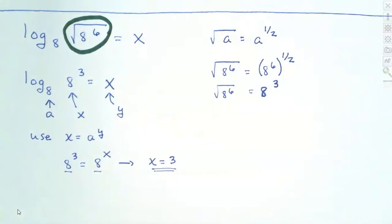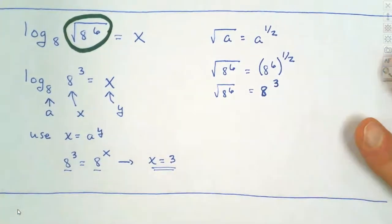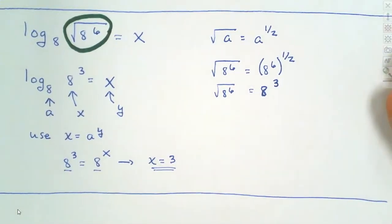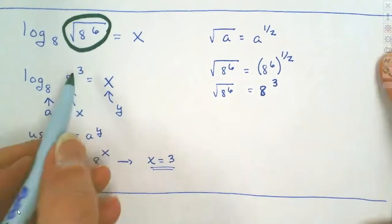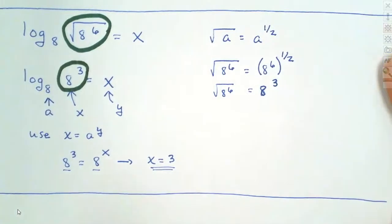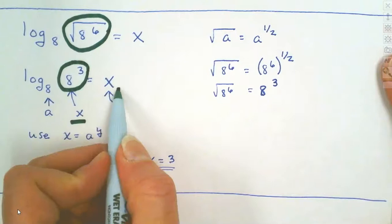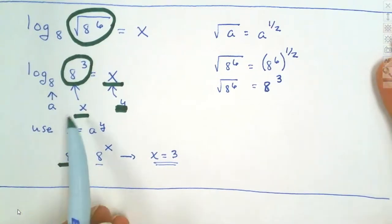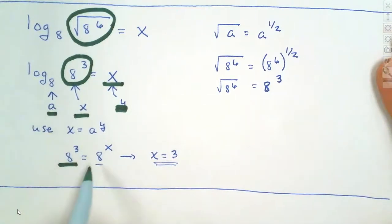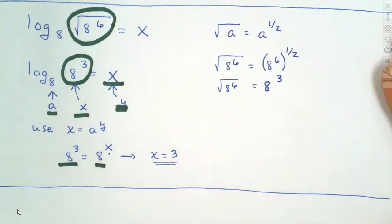All you have to know how to do on these is transform from a logarithm into an exponential. Even though the y is missing on our problem, we solve for x. When we got to that point, our a is 8, our x is the entire simplified part, and our y is x. Label them on the logarithm, transform it to an exponential, and then finish it.